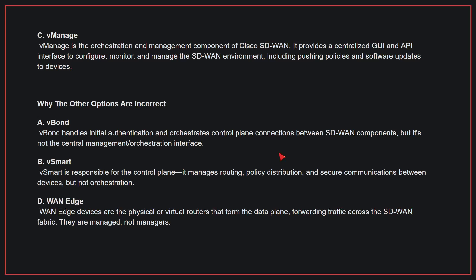Why the other options are incorrect? A: vBON handles initial authentication and orchestrates control plane connections between SD-WAN components, but it's not the central management or orchestration interface. B: vSmart is responsible for the control plane — it manages routing, policy distribution, and secure communications between devices, but not orchestration. D: WAN-edge devices are the physical or virtual routers that form the data plane, forwarding traffic across the SD-WAN fabric; they are managed, not managers. Therefore, the correct answer is C.